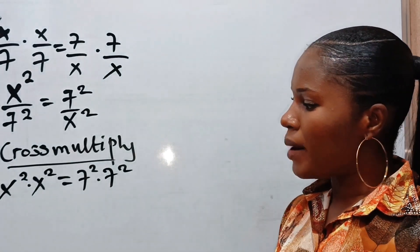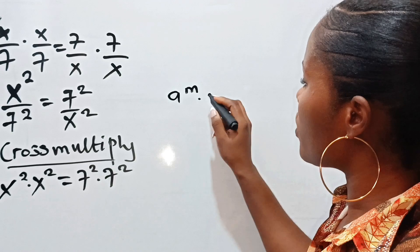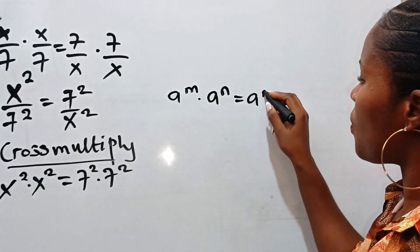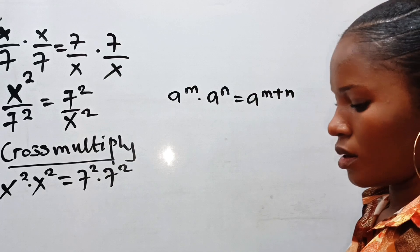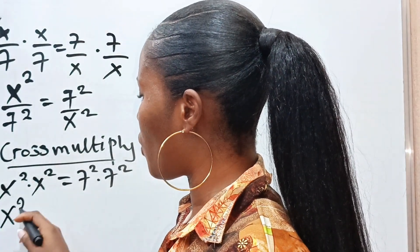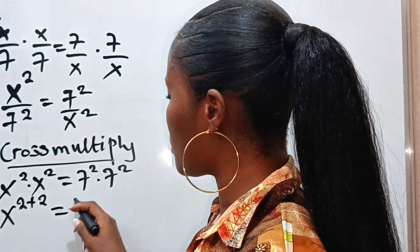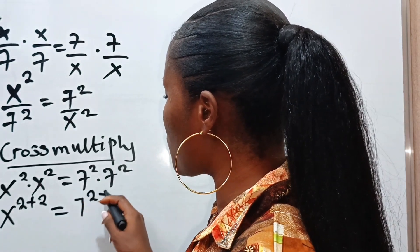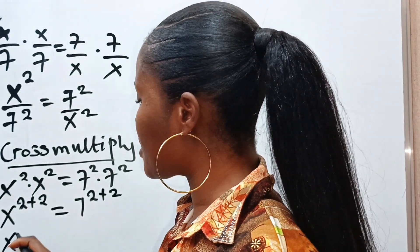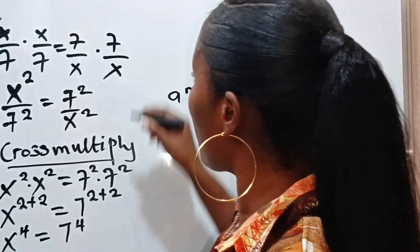Remember that a to the power of m multiplied by a to the power of n is equal to a to the power of m plus n. So we can write this as x to the power of 2 plus 2 is equal to 7 to the power of 2 plus 2. So we have x to the power of 4 is equal to 7 to the power of 4.